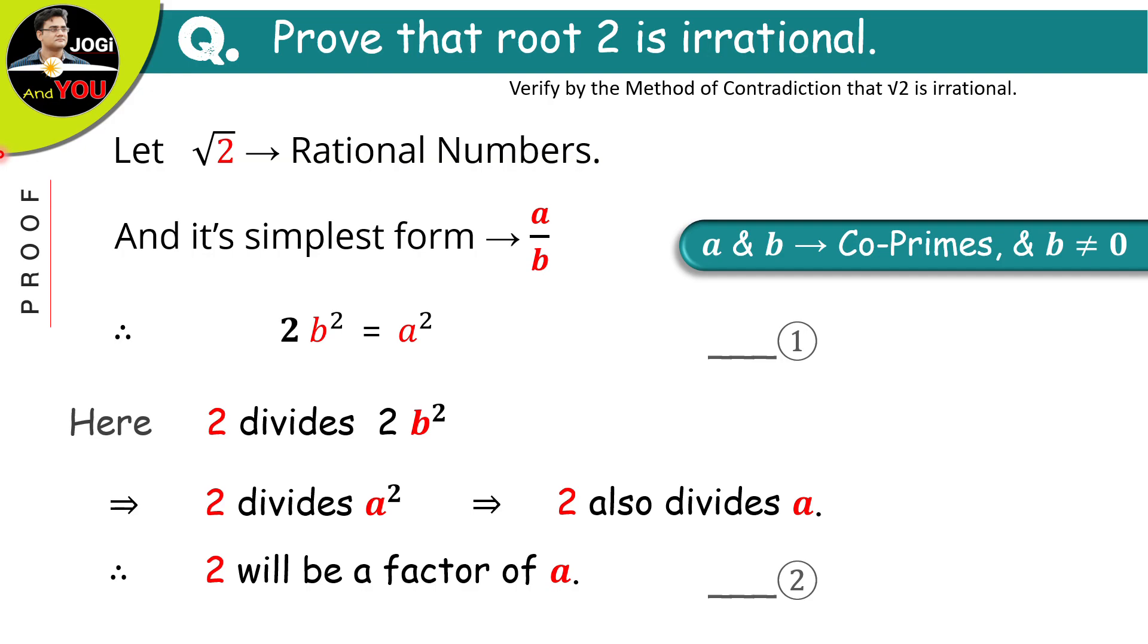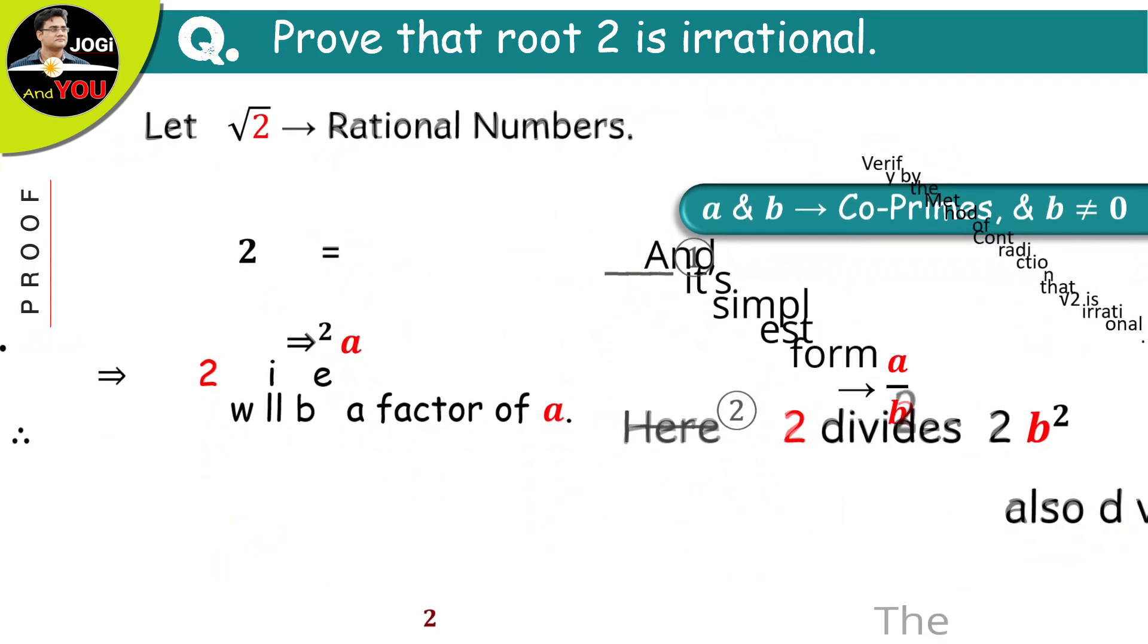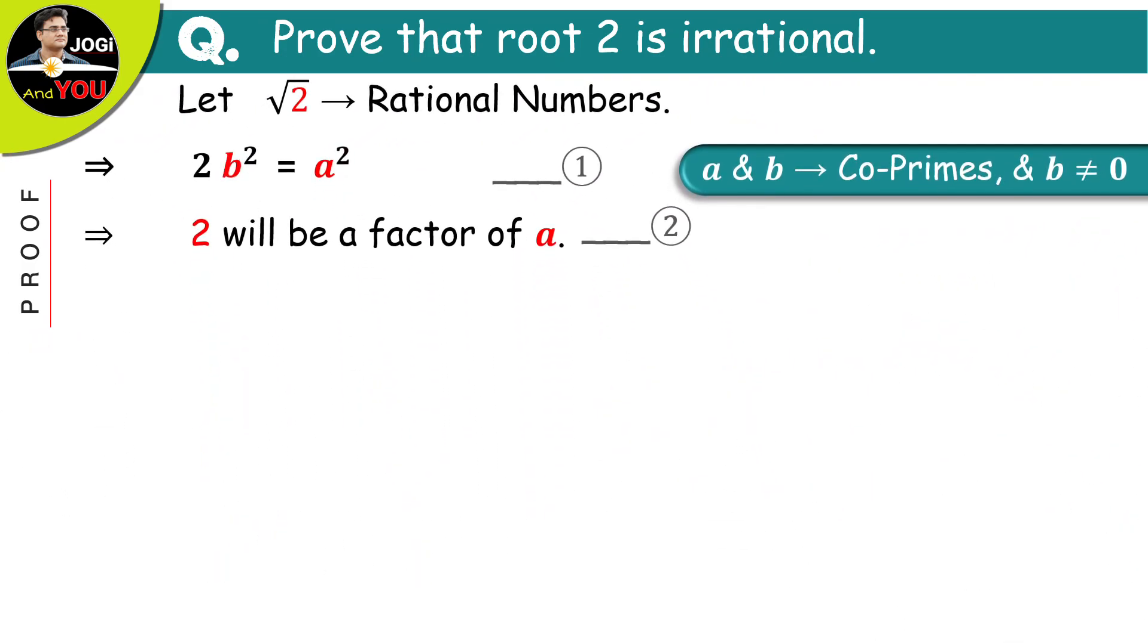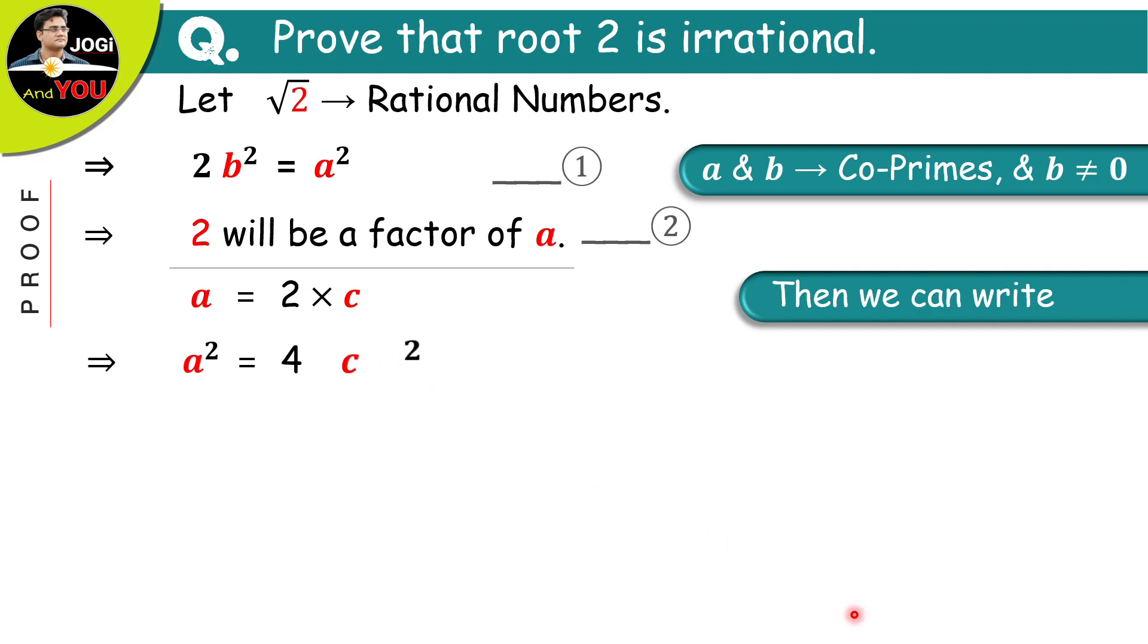And this will be our equation number 2. In all this, these are the things we need and we wiped everything else. Now, according to equation number 2, we can say that a is equal to 2 multiplied by something and that something means let it be some integer c here. So, by squaring both the sides, we get a square is equal to 4c square and this is equation number 3.